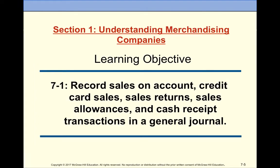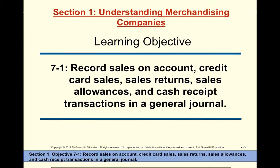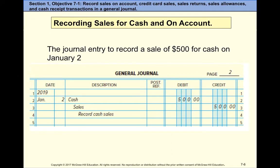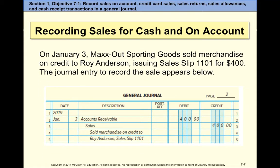Now let's look at journal entries. First, recording sales for cash — nothing new; you've done this before. We record a sale of $500 for cash: debit cash, credit sales. Sales is your revenue account.